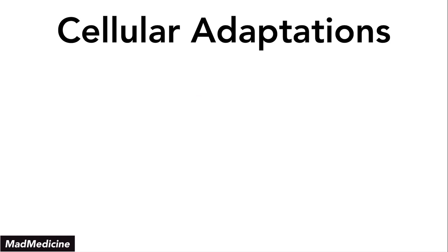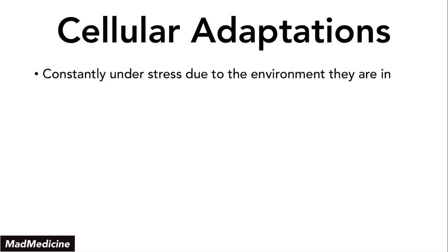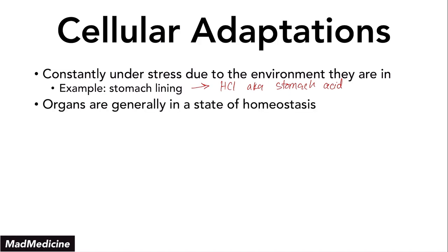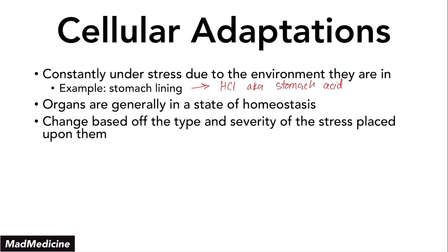It's very important to understand that our cells are constantly under stress because of the environment that they are in. The micro environment is very stressful — one example is the stomach lining, which is very dangerous because hydrochloric acid, aka stomach acid, is constantly eroding it. Our cells have developed adaptations to survive in that stressful environment. At the macro level, our organs are generally in a state of homeostasis and adapt to different stressors by changing their function and structure, based on the type and severity of the stress placed upon them.